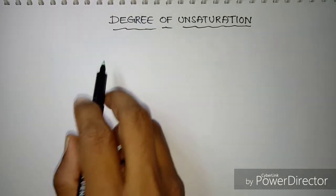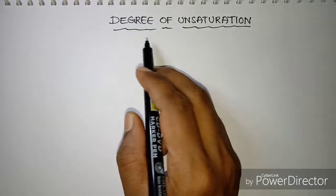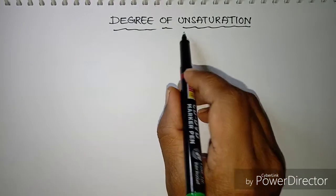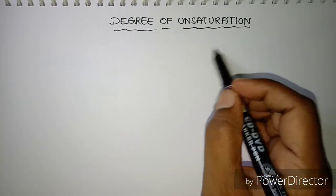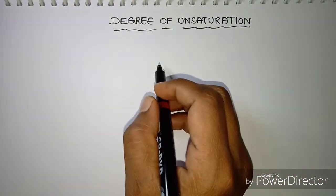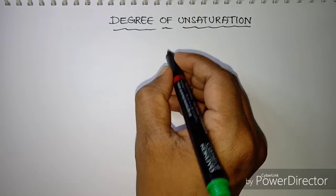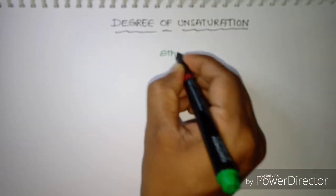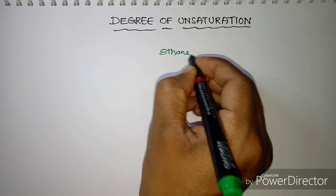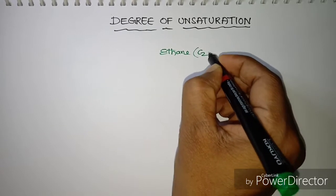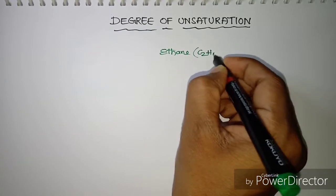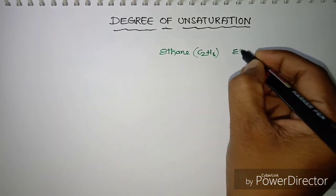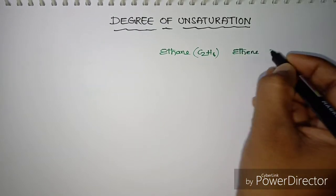Hello friends. In this video we are going to learn about the degree of unsaturation. As we are very familiar with unsaturated and saturated compounds, let's have a quick review. I am taking the example of ethane, whose formula is C2H6, and similarly I'll take the example of ethene, whose formula is C2H4.